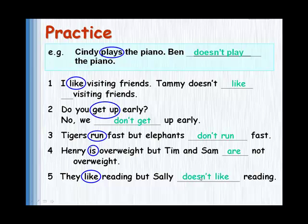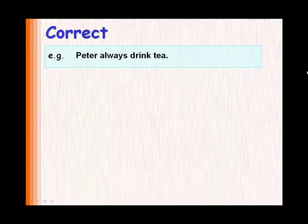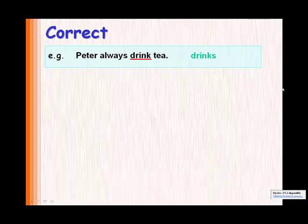This exercise has been entirely with negatives. Now I'd like to end with an exercise which has sentences with errors — errors with positive, negative, and interrogative sentences. For example: Peter always drink tea. What is the error? The verb — it needs an S, because it's affirmative and Peter is he. So: Peter always drinks tea.